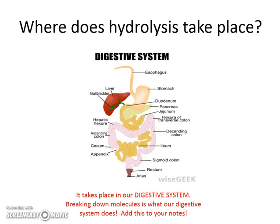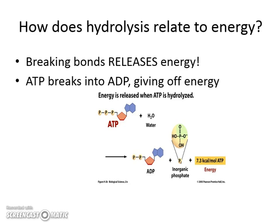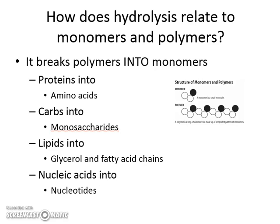Hydrolysis takes place in the digestive system. So whenever we drink water, our digestive system adds it to our food and molecules. That's important to energy because in order to release energy, you have to break the bonds — you can do that by chewing your food, adding water, breaking it down, and giving off energy. And then whenever you want to break apart polymers — large molecules — into their smaller pieces called monomers, that's when we use hydrolysis.